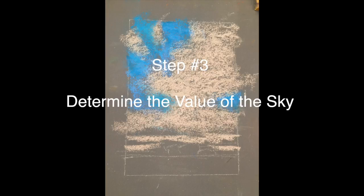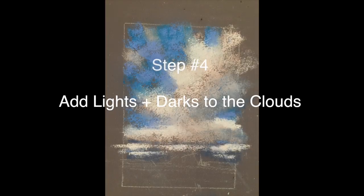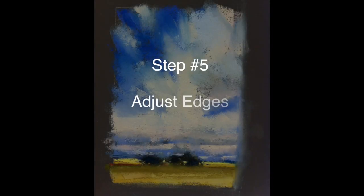Number three we want to identify the average value of the sky and block that in. Then we want to add the lights and darks to the clouds. And number five we want to adjust the edges.